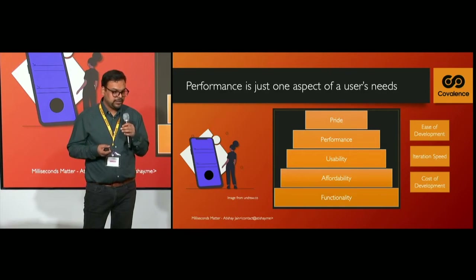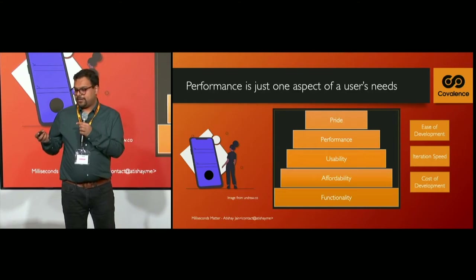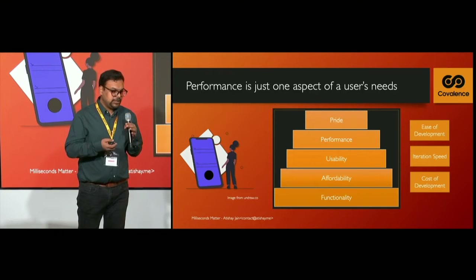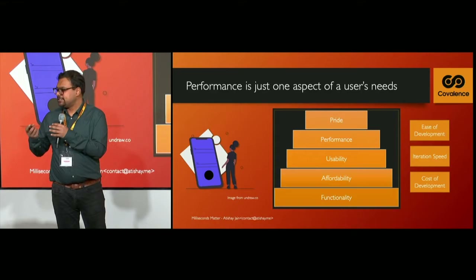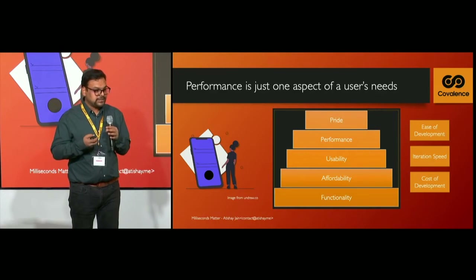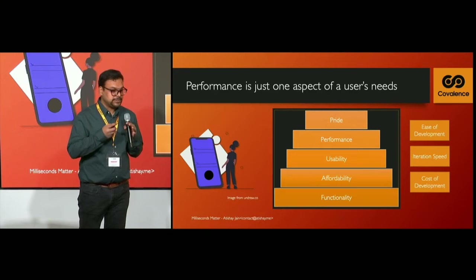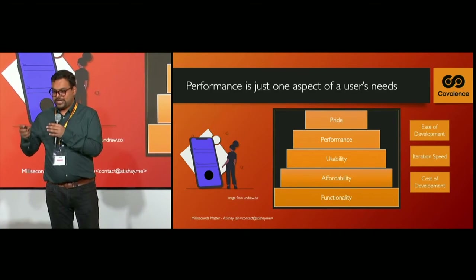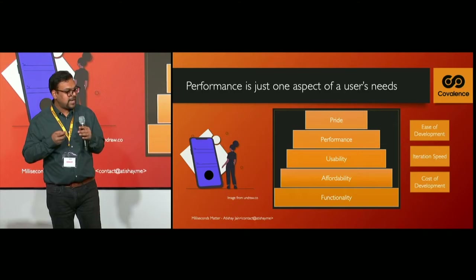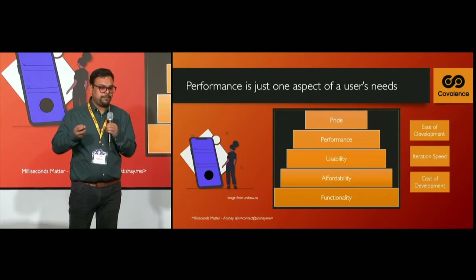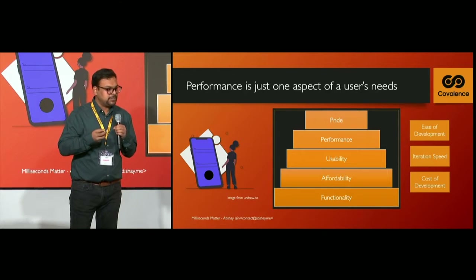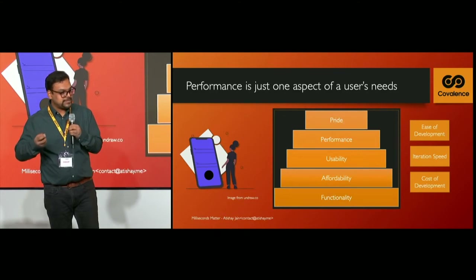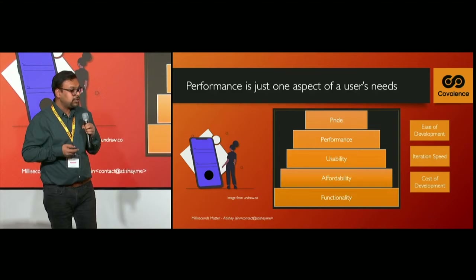My first big lesson developing this was an understanding in psychology more so than engineering. For a user, 'performance' has a very different meaning than it does for a developer. What a user cares about is getting work done at a cost they can profit from, a tool that is easy to understand and use, and performance that is not a hindrance. If you improve a component from 25 milliseconds to 20 milliseconds, no one might notice — but if a button click reaction becomes faster, users appreciate it.